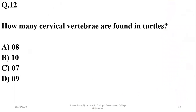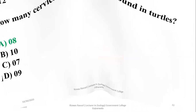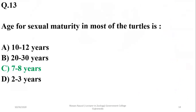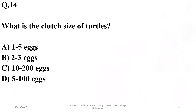Question twelve: how many cervical vertebrae are found in turtles? There are eight, while mammals have seven. For sexual maturity, most turtles take seven to eight years to reproduce, and their clutch size is usually five to one hundred. The correct option is delta.